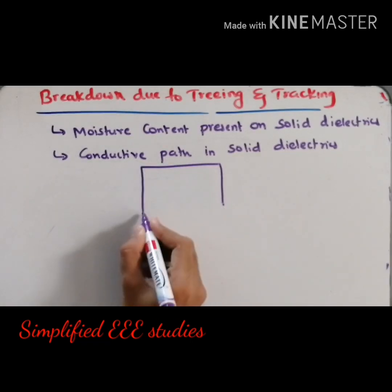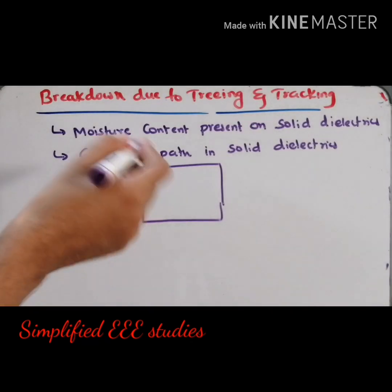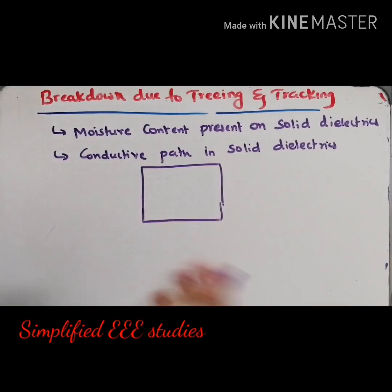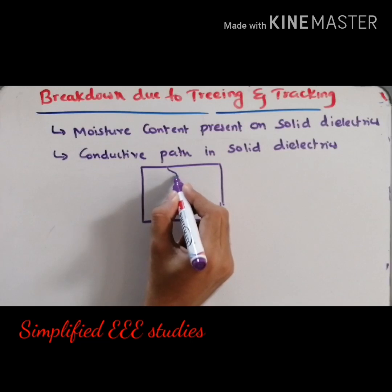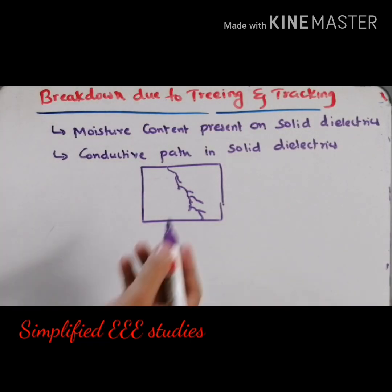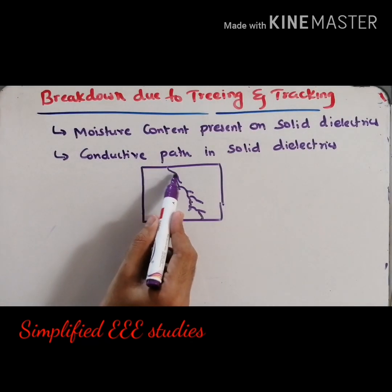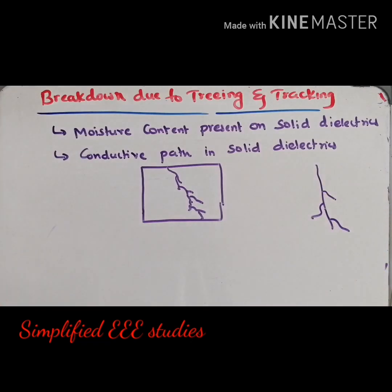Suppose this is a solid dielectric test piece. You are operating it under high voltage. Because of the moisture content over the surface, after applying high voltage for a very long duration, a small amount of conductive path will be generated inside the solid dielectric test piece. If you look at this particular path, it looks like a tree with several branches. That is why it is known as treeing and tracking — a phenomenon generally observed in solid dielectric materials.